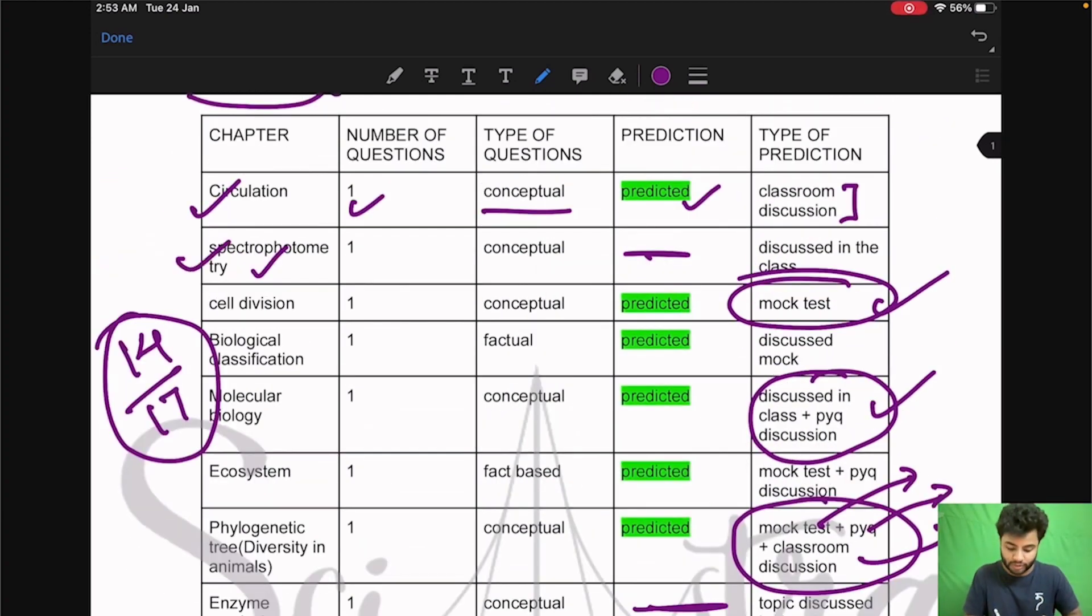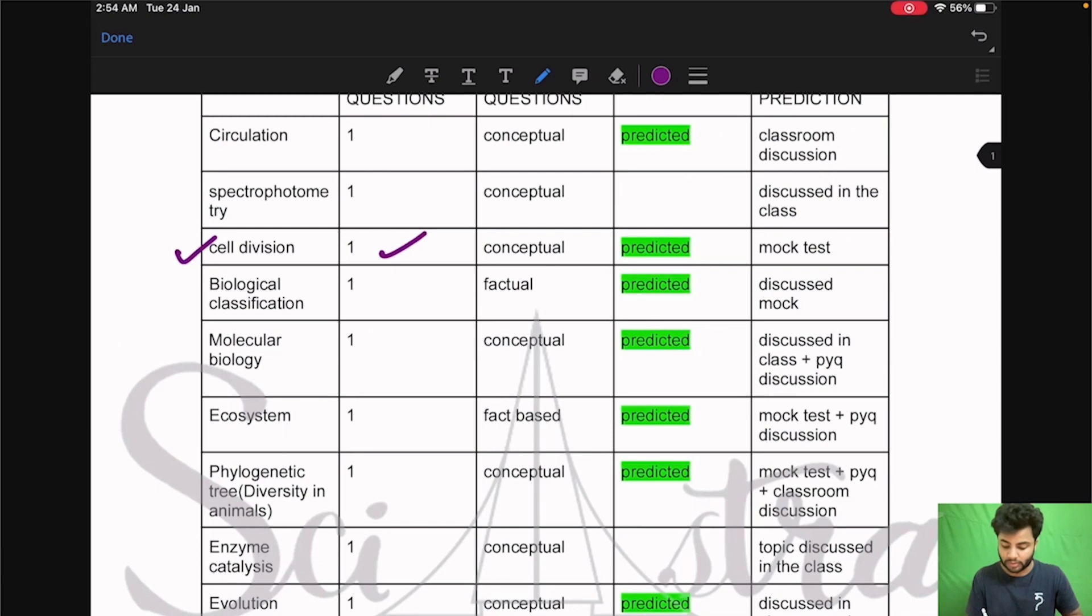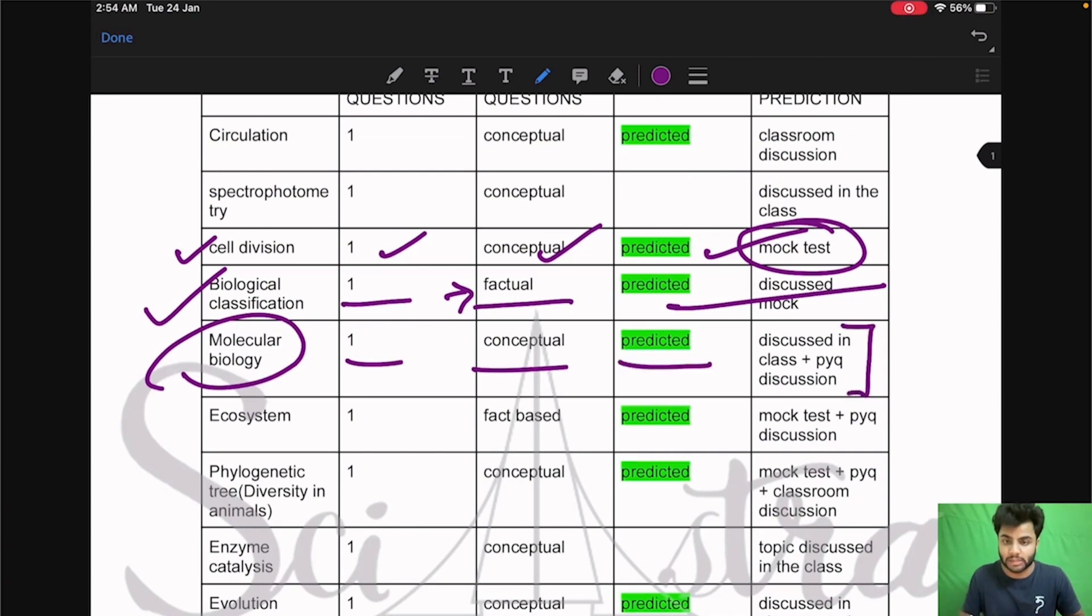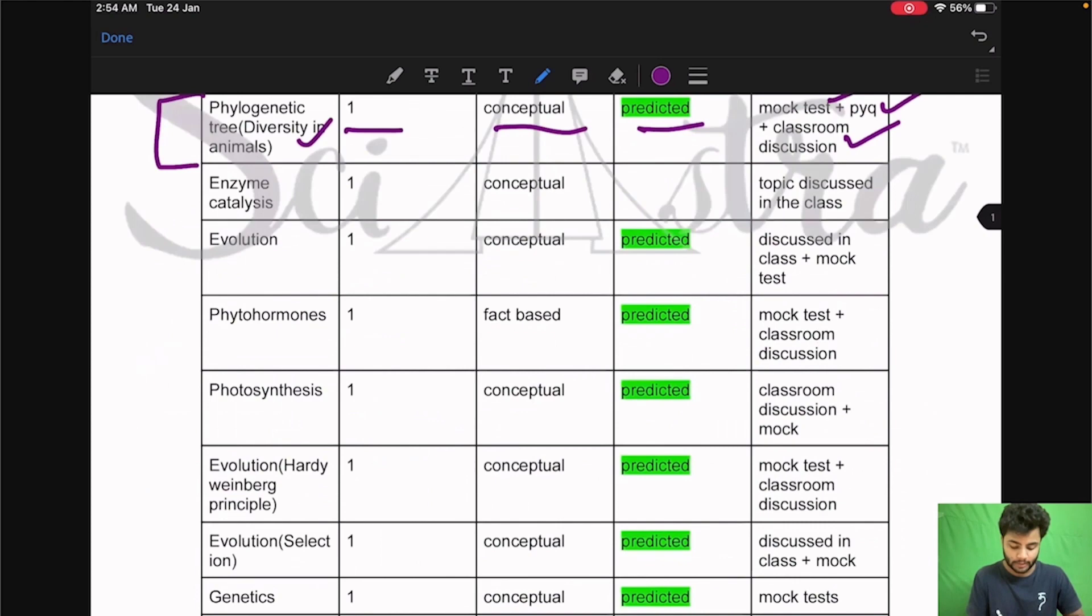Now the chapter was spectrophotometry. One question came from here. Conceptual question and it was already discussed in the class. Then question came from cell division. One question conceptual already predicted also given in the mock test. Then from biological classification. One question factual question came and it was already predicted discussed in the mock test. Then molecular biology. One question came conceptual predicted already discussed in the class as well as previous year paper discussion. Then ecosystem. One question came fact-based predicted. It came in the mock test of Sciastra as well as the previous year paper discussion.